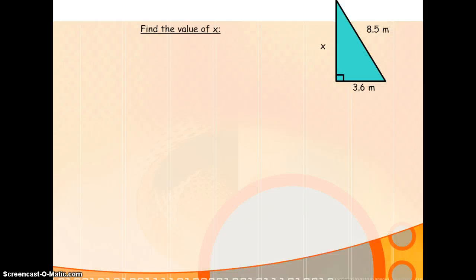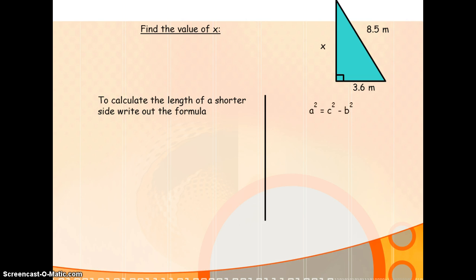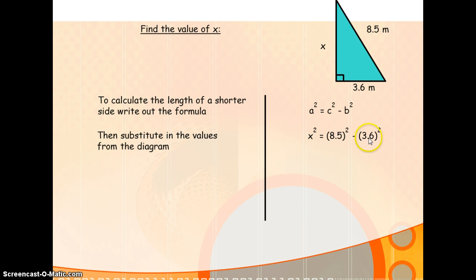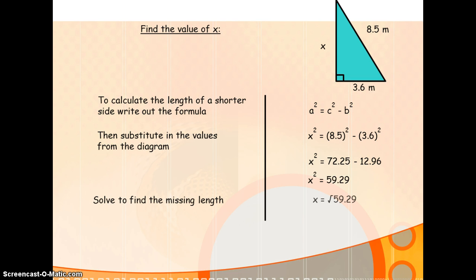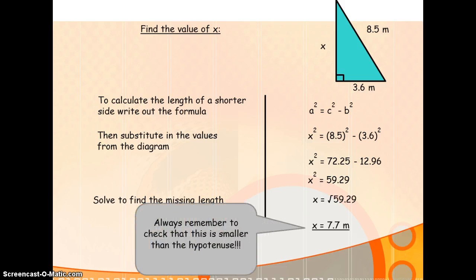Try this example yourself. We're given two sides and asked to find a third. Across from the right angle is the hypotenuse, so this must be a shorter side. Starting with the formula — a squared equals c squared minus b squared — the shorter side squared is equal to the hypotenuse squared minus the other side squared. Working it all out and square rooting 59.29, x is equal to 7.7. Does that make sense? Is it smaller than the hypotenuse? Yes, it is.